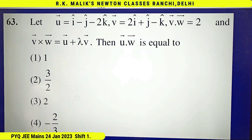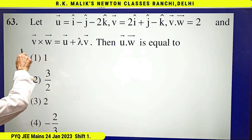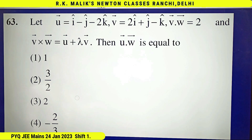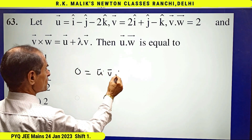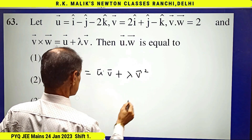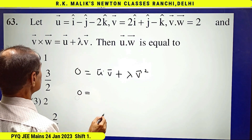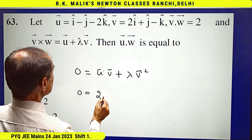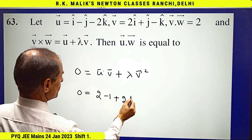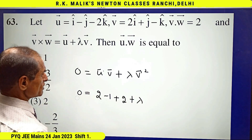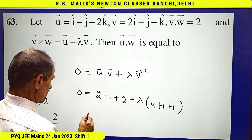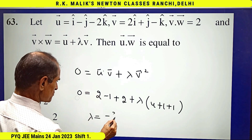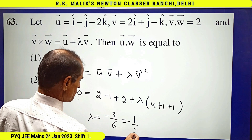To find the value of λ, take dot product with v on both sides. The left-hand side will be zero, giving us u·v + λ|v|² = 0. The value of u·v is 2 − 1 + 2, and λ times |v|² where |v|² = 4 + 1 + 1 = 6, giving λ = −3/6, that is λ = −1/2.